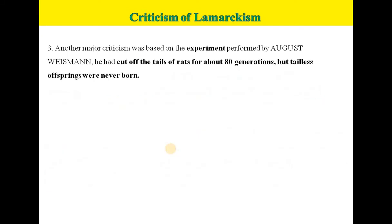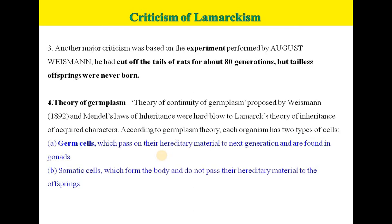Another major criticism was based on the experiment performed by August Weismann. He cut off the tail of rats for about 80 generations, but tail-less offspring were never born. The Theory of Continuity of Germplasm proposed by Weismann and Mendel's law of inheritance were a hard blow to Lamarck's theory of inheritance of acquired characters.